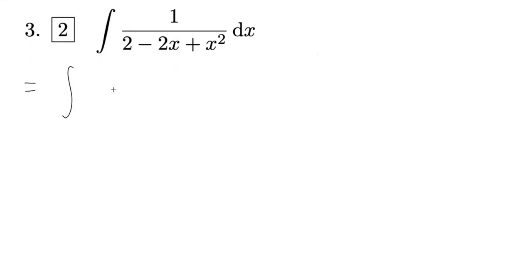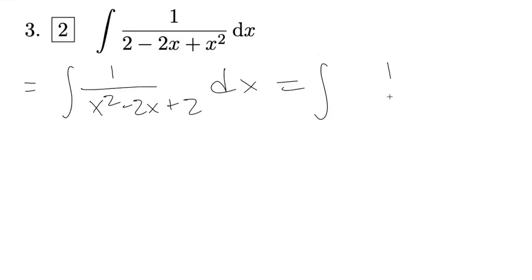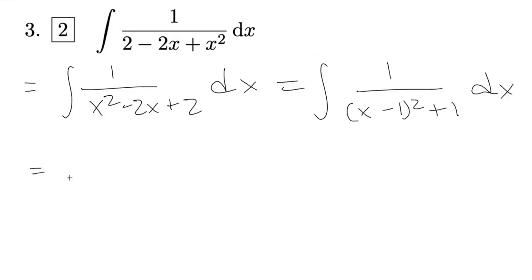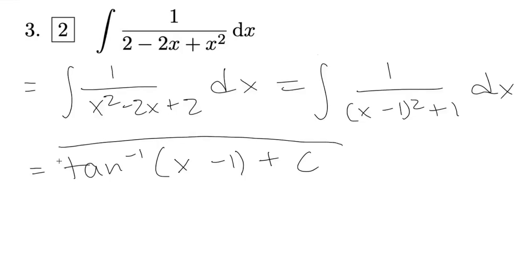This is going to be equal to the integral of 1 by x squared minus 2x plus 2 dx, which is equal to the integral of 1 by x minus 1 whole square plus 1 dx, which is equal to the tan inverse of x minus 1 plus c. And there we have our final solution.